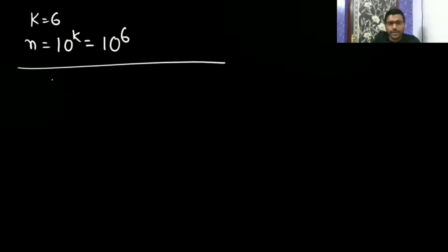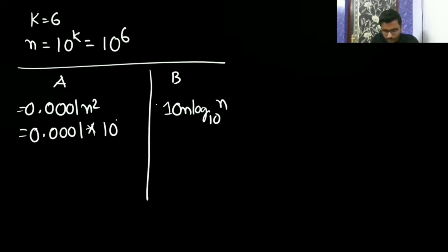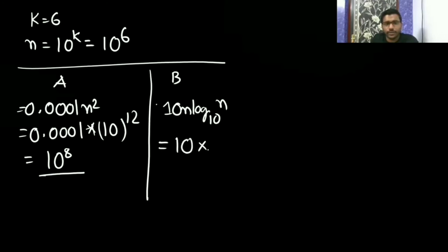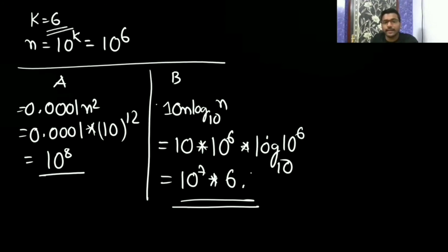Now take k equal to 6. When k is 6, N is 10 to the power 6. Package A takes 0.0001 N squared, which is 10 to the power 8. Package B takes 10 N log base 10 of N, which is 10 into 10 to the power 6 into 6, giving 10 to the power 7 into 6. So package B is taking less time when k is equal to 6.